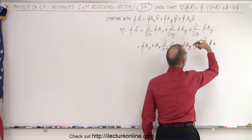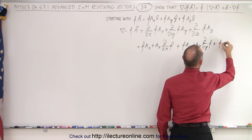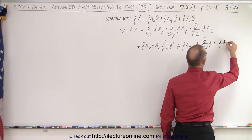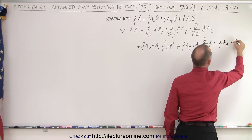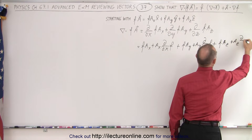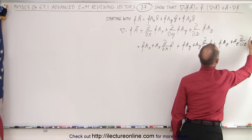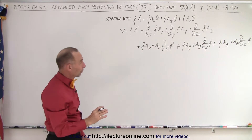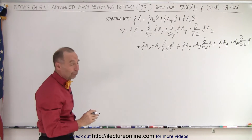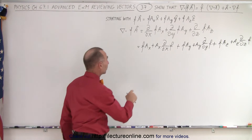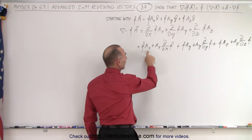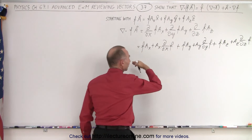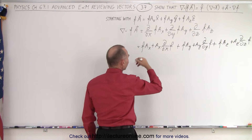And then we do it a third time — the same thing. It's f times the partial derivative with respect to z of A sub z, plus A sub z times the partial derivative with respect to z of f. So now we have six terms, and three of them have f times A sub x, f times A sub y, and f times A sub z.